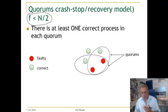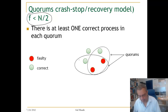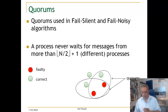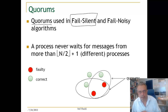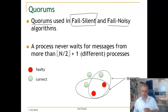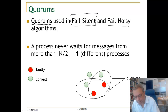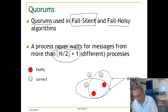These three properties are always exploited in algorithms that rely on quorums, and we will see that in the abstractions to be implemented in the next lectures. Quorums are used mainly in silent algorithms — algorithms that do not rely on a failure detector and assume an asynchronous system — and also in some algorithms for noisy, partially synchronous systems. In most of these algorithms, a process will never wait for messages from more than floor(N/2) plus one processes, because waiting for more could cause it to hang forever if the rest are faulty.